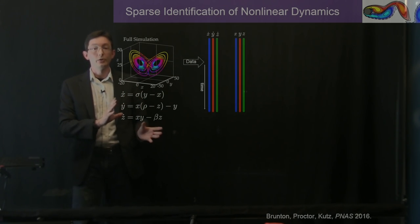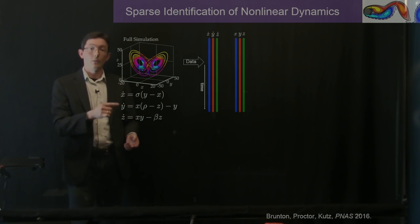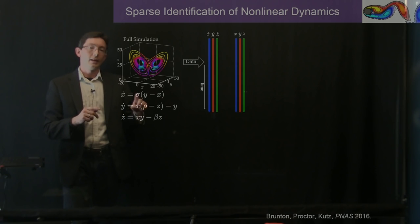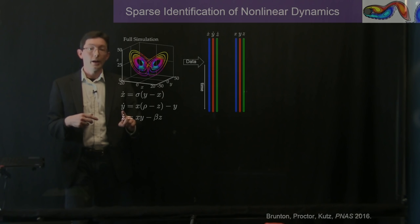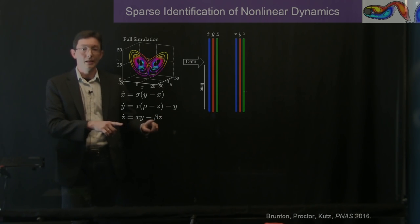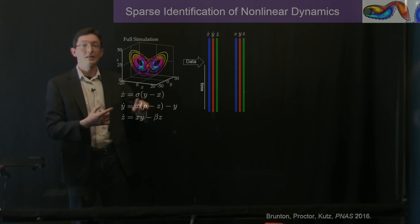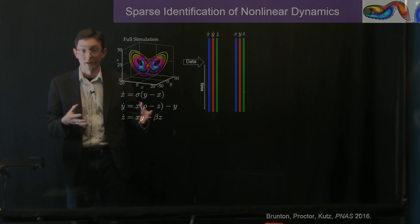We'll illustrate this on a very simple toy system, the Lorenz attractor. We have equations for three variables x, y, and z describing the evolution of this chaotic system. In the x-dot dynamics, the only active terms are y and x with constants sigma, rho, and beta. In y-dot, we have a linear term in x, a nonlinear term in xz, and a linear term in y. In z-dot, we have a linear term in z and the only nonlinearity is xy. So these equations are relatively simple — out of all possible right-hand side functions, this has a very specific sparse form with only a few active terms.